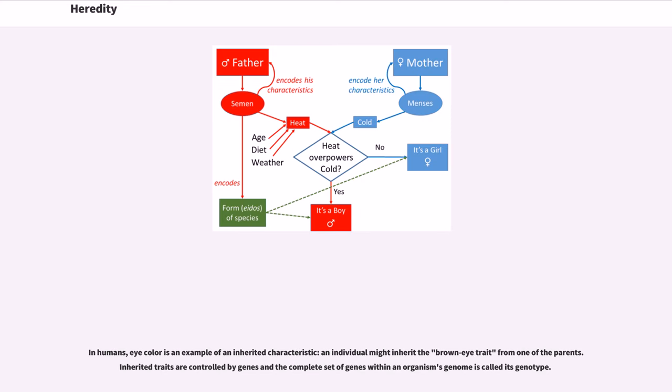In humans, eye color is an example of an inherited characteristic. An individual might inherit the brown eye trait from one of the parents. Inherited traits are controlled by genes and the complete set of genes within an organism's genome is called its genotype.